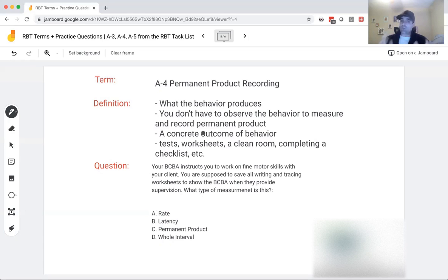Permanent product. Very, very simple, right? Don't complicate it. Whatever the behavior produces, it has to be concrete. So a tantrum. I can't measure a tantrum, right, if it doesn't produce anything because I wasn't there to see it. So it has to produce something that I can look at and record afterwards.